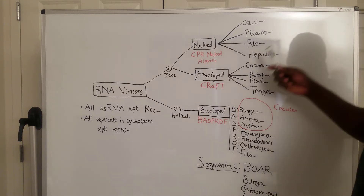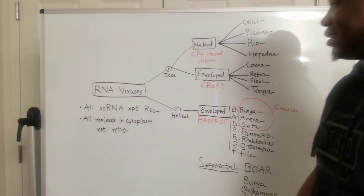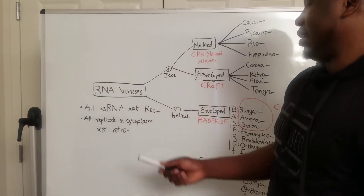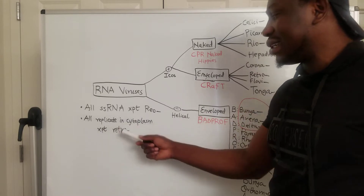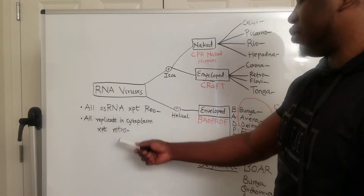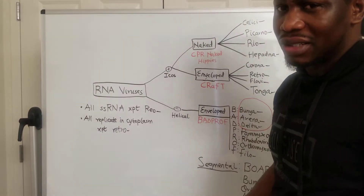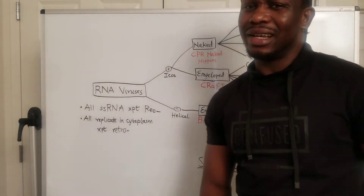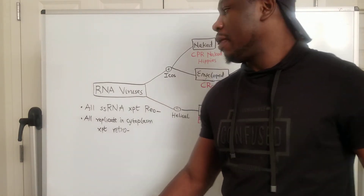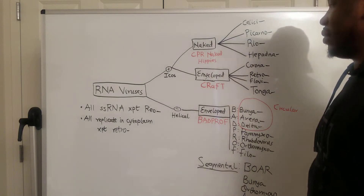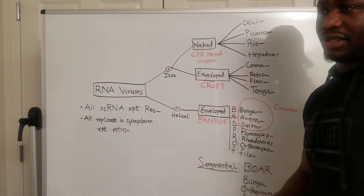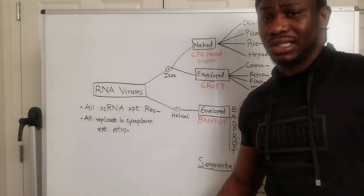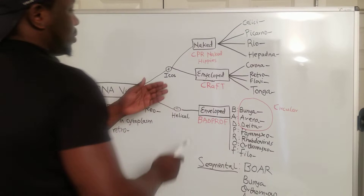There are a lot to cover in RNA viruses. For RNA viruses, the exceptions are: they are all single stranded RNA except reovirus. They all replicate in the cytoplasm except retrovirus. Unlike DNA viruses, which were all icosahedral, for RNA viruses, the positive-sense ones are icosahedral shaped and the negative-sense ones are all helical shaped.